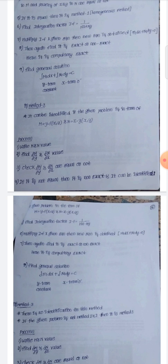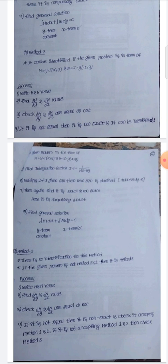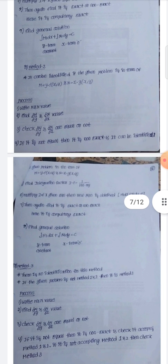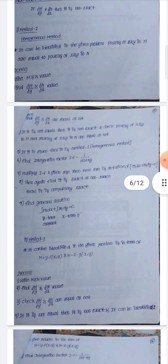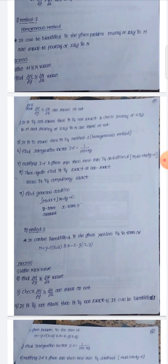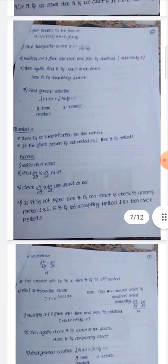After the new equation is obtained, check M1 and N1 values. If they are equal (exact), apply the general solution: integration of M1 dx + integration of N1 dy = C, with the y-term constant and x-term zero. The second method for non-exact equations is when M = y·f(xy) and N = x·g(xy).